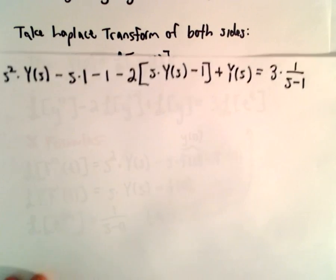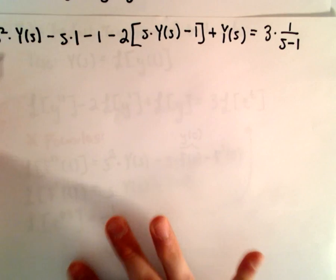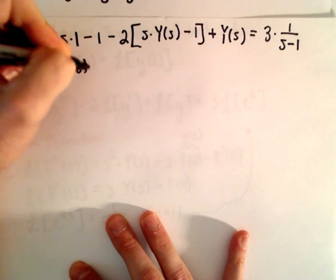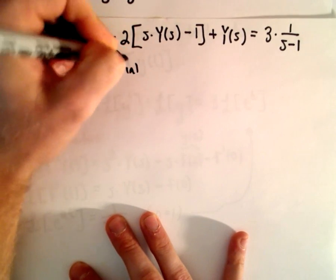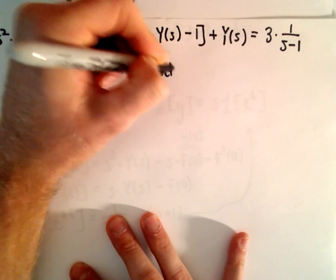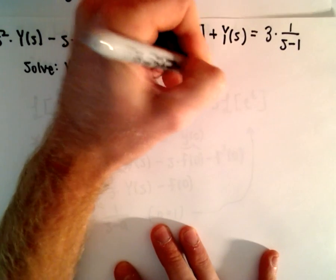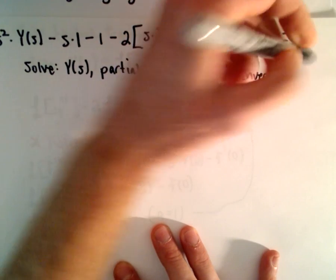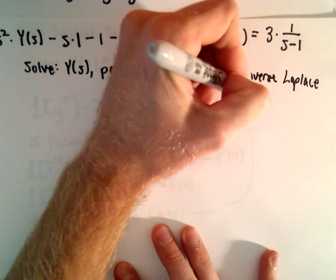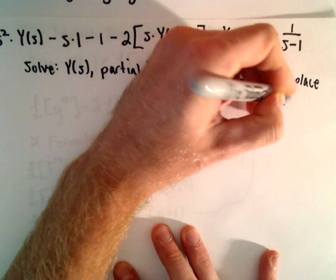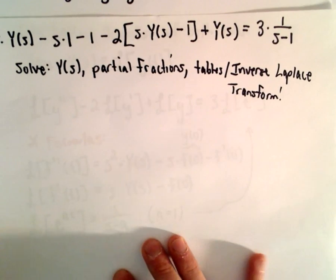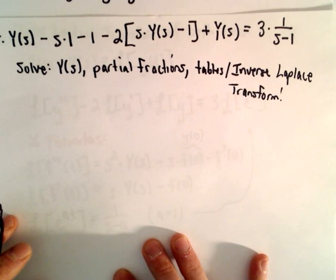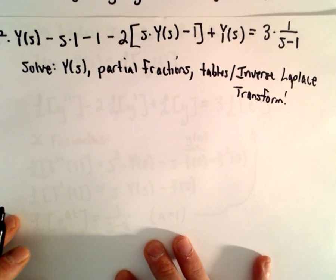So now I've used the Laplace transform and those formulas. What we're going to do is solve for Y of s. Then we're going to use partial fractions to break it up. And then, again, we'll use tables and the inverse Laplace transform to get our solution. Those are the steps: solve for Y of s, use partial fractions, then apply the inverse Laplace transform.